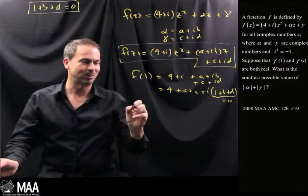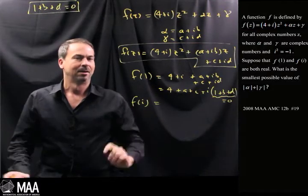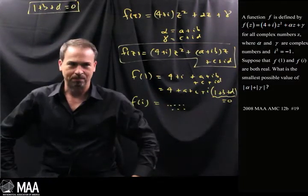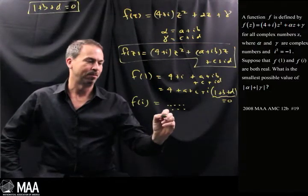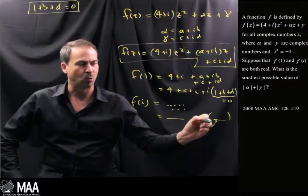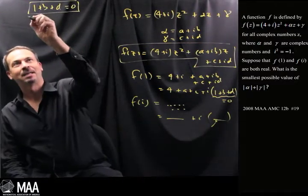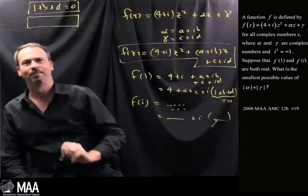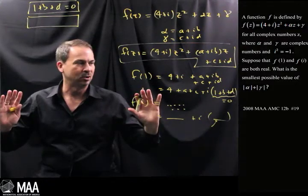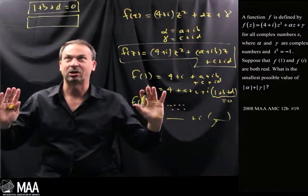Let's do it again. The other piece of information was f(i). I'm going to leave that one to you. But it too is going to have some real part plus some imaginary part, and it's going to have some equation that I can add up to here, and I'll get two equations.